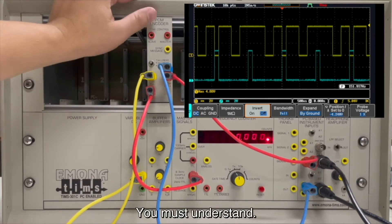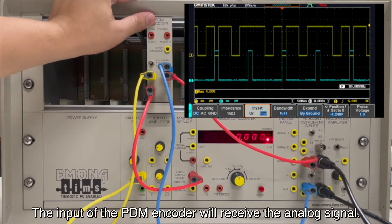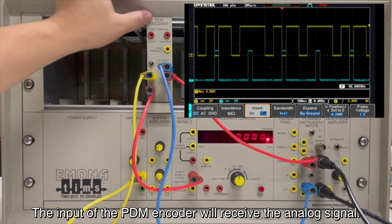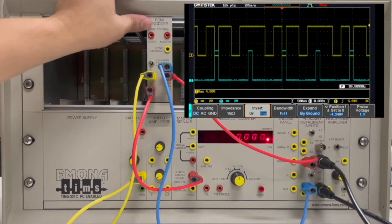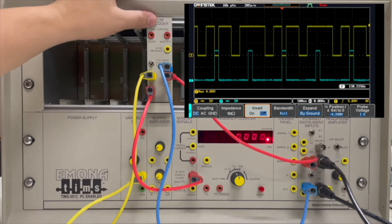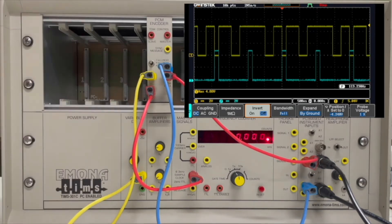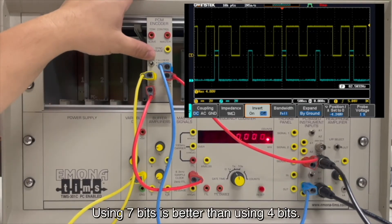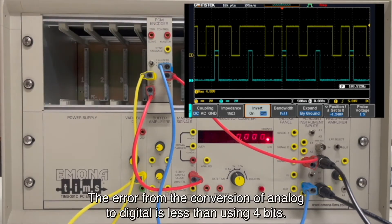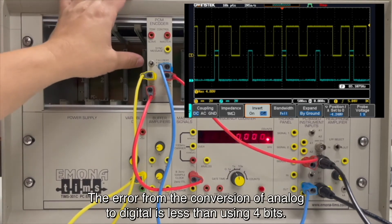You must understand the input of the PCM encoder. We will receive the analog signal. This module consists of sampling and quantization. Using 7 bits is better than using 4 bits. The error for the conversion of analog to digital is less than using 4 bits.